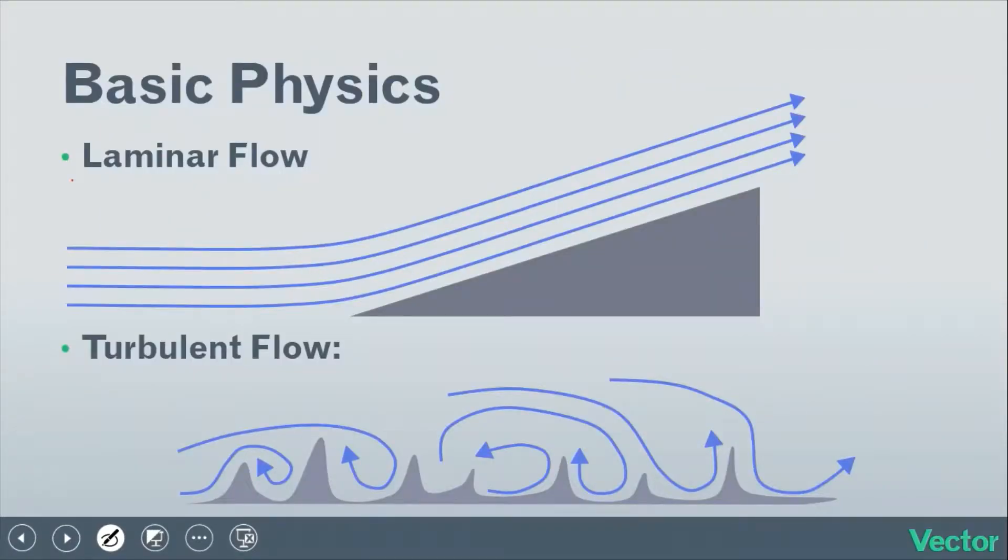It's this laminar flow that we need to produce a force. This laminar flow is what's going to be useful for us. Turbulent flow isn't useful in any meaningful way - we need laminar flow to produce a force.